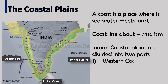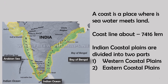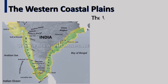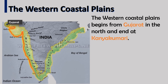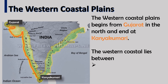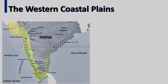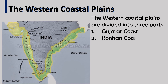First, western coastal plains, and second, eastern coastal plains. The western coastal plains begin from Gujarat in the north and end at Kanyakumari. The western coast lies between the Western Ghats and the Arabian Sea. The western coastal plains are divided into three parts: Gujarat coast, Konkan coast, and Malabar coast. Refer to the highlighted part in the map.